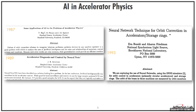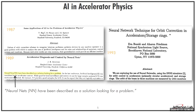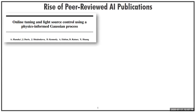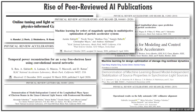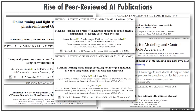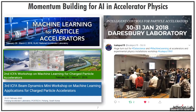Artificial intelligence and accelerator physics actually has a fairly long history — these papers are from the late 80s and early 90s, when people were already wondering how to leverage machine learning in this field. Unfortunately, it never really caught on for a variety of reasons. I particularly like the first sentence in one abstract, namely that neural nets have been described as a solution looking for a problem. That's kind of where we were for a long time in the field. But within the last two years, there has really been an explosion of AI applications, and you can see the rise of peer-reviewed AI publications in the field.